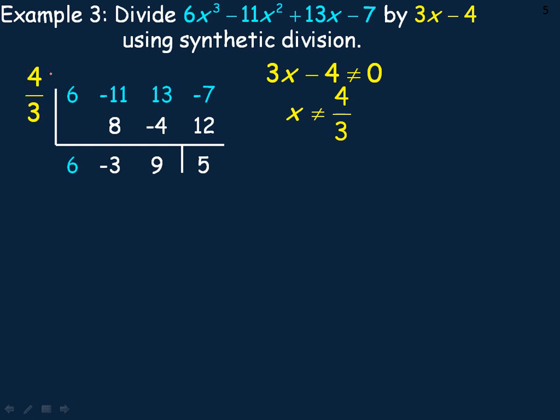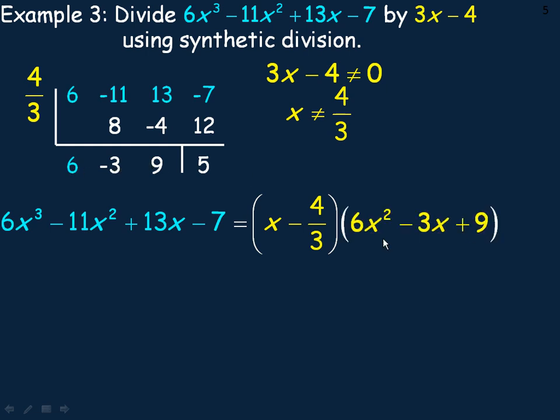The division statement would look like this. Our original polynomial here would equal the product of x minus 4/3, because that's what's over here, and 6x² - 3x + 9, that's our answer if you will, plus the remainder of 5.